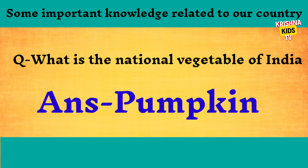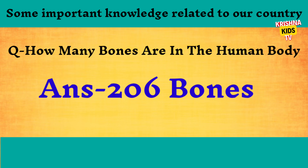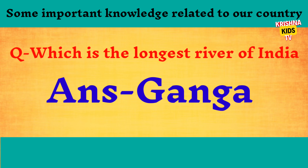What is the national vegetable of India? Pumpkin. How many days are there in one year? 365 days. How many bones are in the human body? 206 bones.